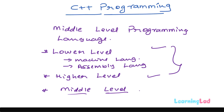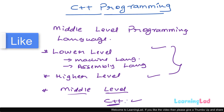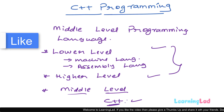The C++ programming language comes in the category of middle level languages. Whether a programming language belongs to higher, lower, or middle level doesn't really mean that language is good or bad — every programming language has its own pros and cons.